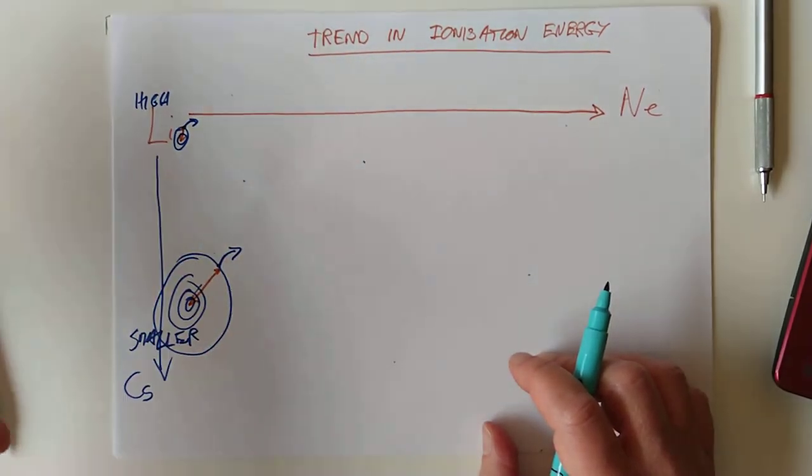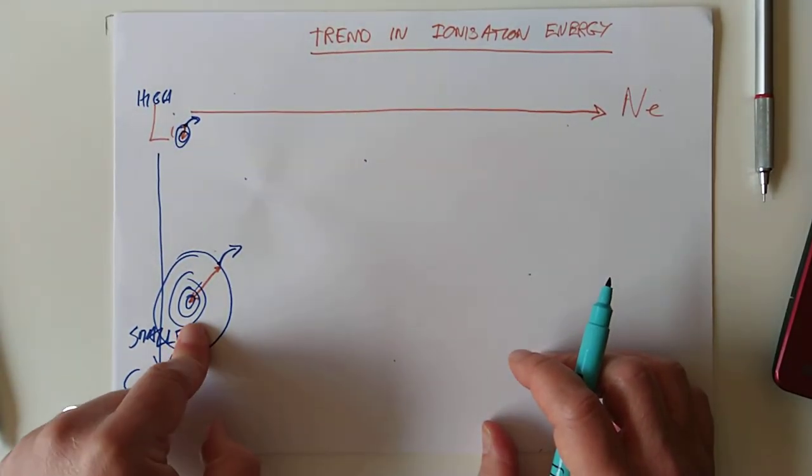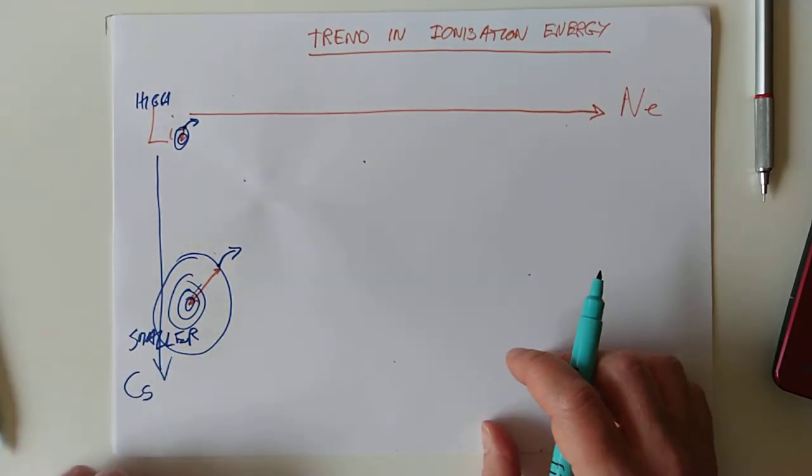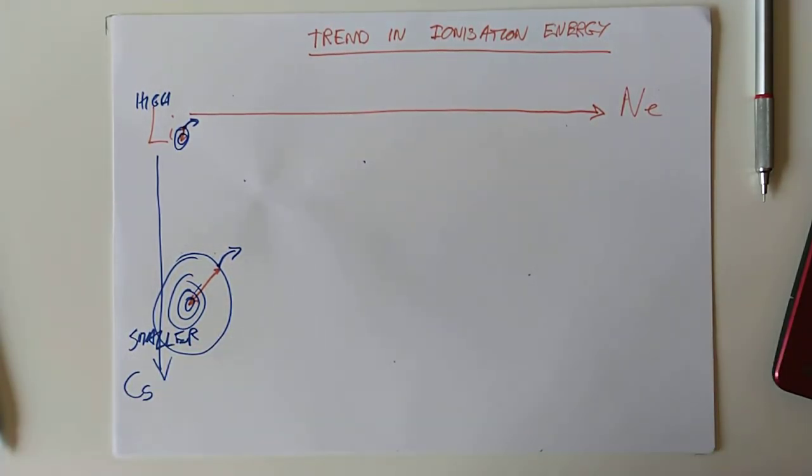And that's why they get more reactive. This electron is desperate to fly off. It's got lower activation energy. Remember that? See, this is why we teach it in this order. Told you there was a reason.